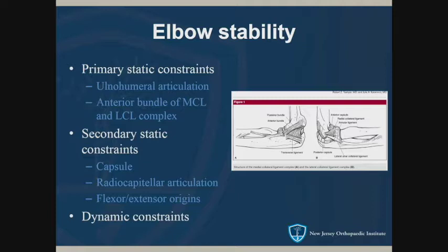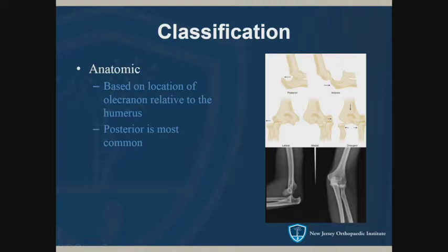In terms of the classification for elbow dislocations, we base it on the location of the olecranon relative to the humerus. Most commonly it's a posterior dislocation, shown in these radiographs here, where the olecranon goes straight back and the distal humerus rides anteriorly over it. It's very important to get a lateral view, because the AP view isn't always clear — you might think it's just an oblique radiograph, but then you look at the lateral and see what's really going on.